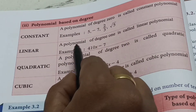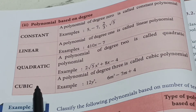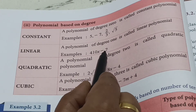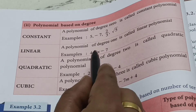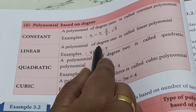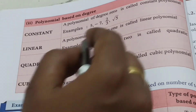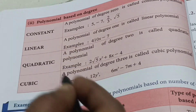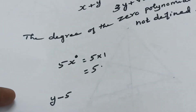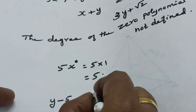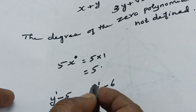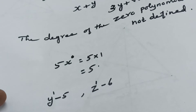A polynomial of degree 1 is called a linear polynomial. For example, 10X minus 7 — X is the variable with power 1, so the degree is 1, making it a linear polynomial. Other examples include Y minus 5 and Z minus 6, all of which have degree 1 and are therefore linear polynomials.